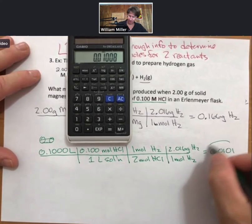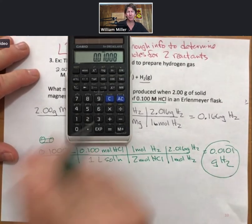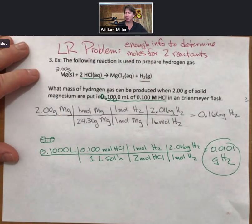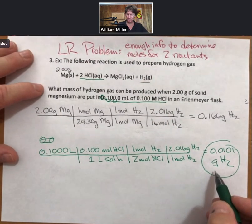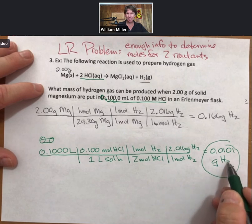That is much smaller. It is always in limiting reactant problems the smaller amount that you can make. And so what mass of hydrogen can be produced? This mass here.